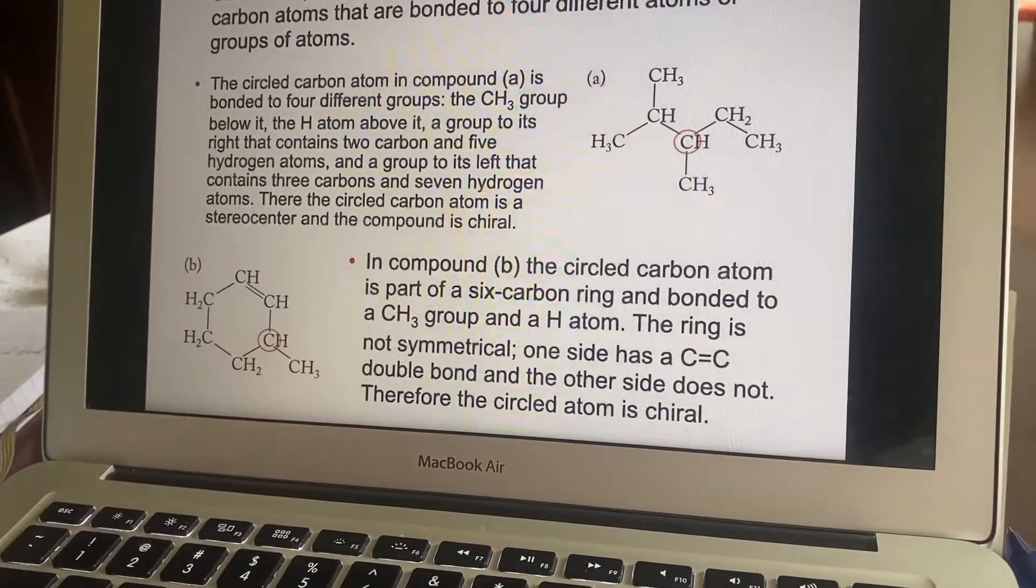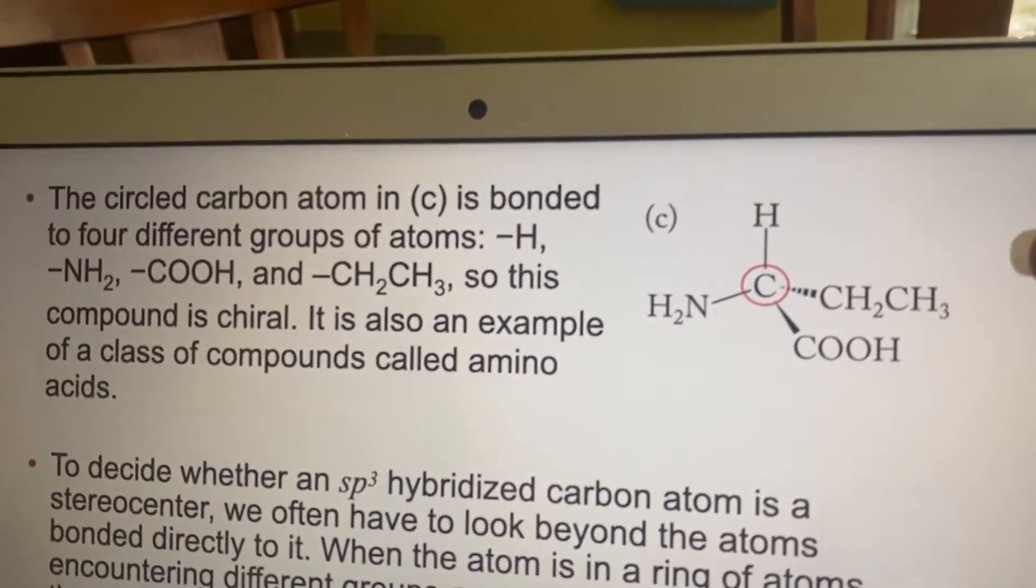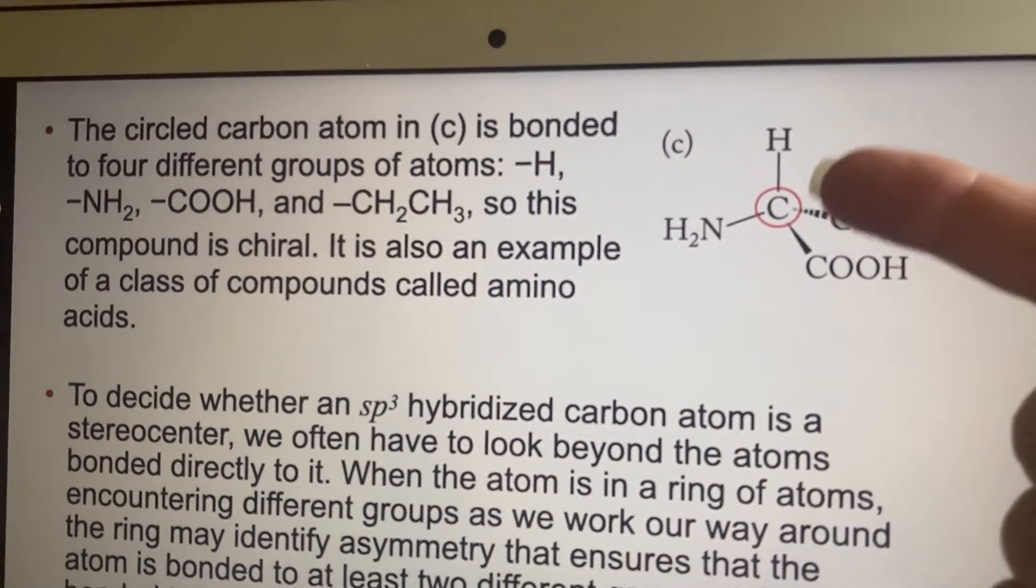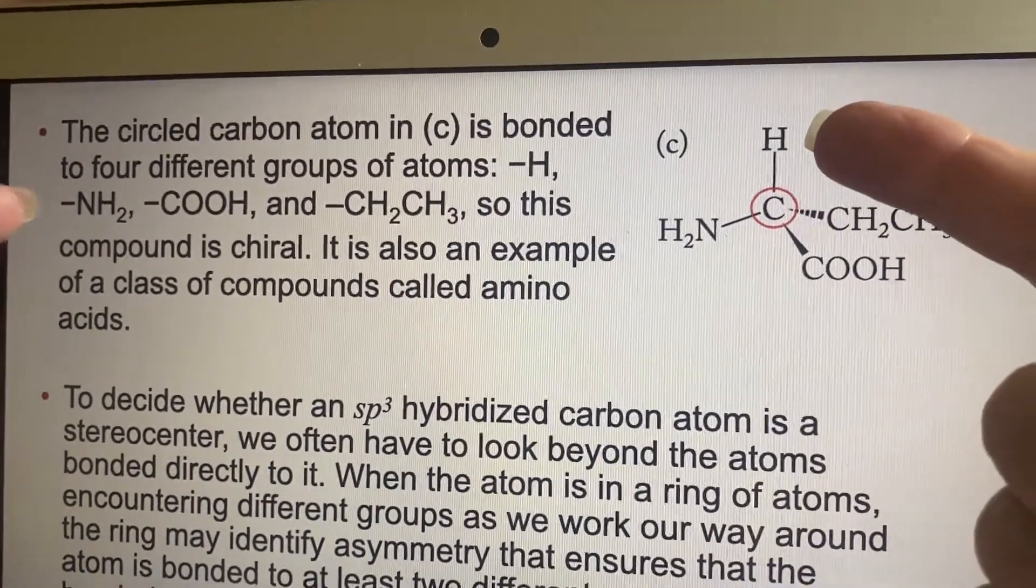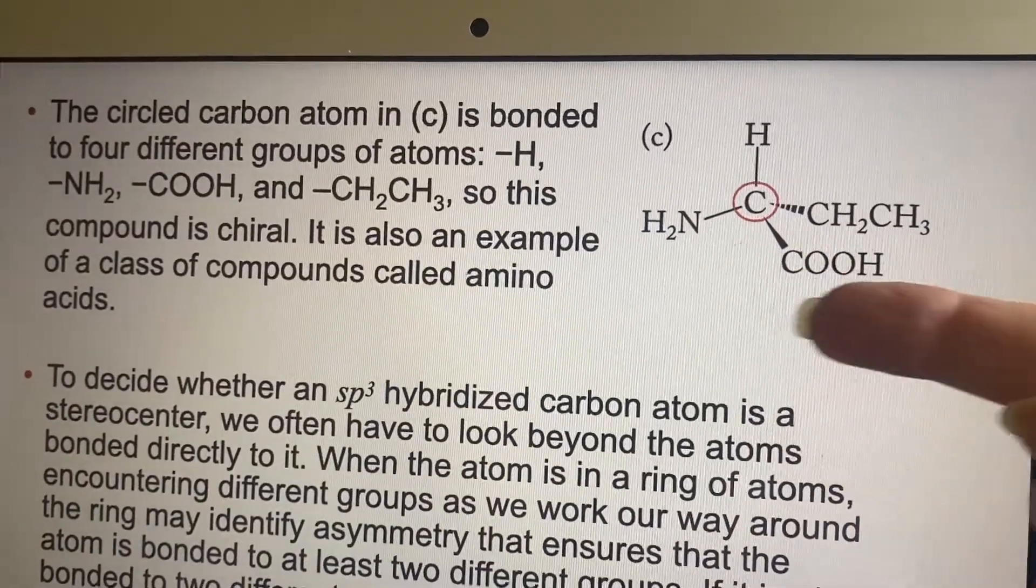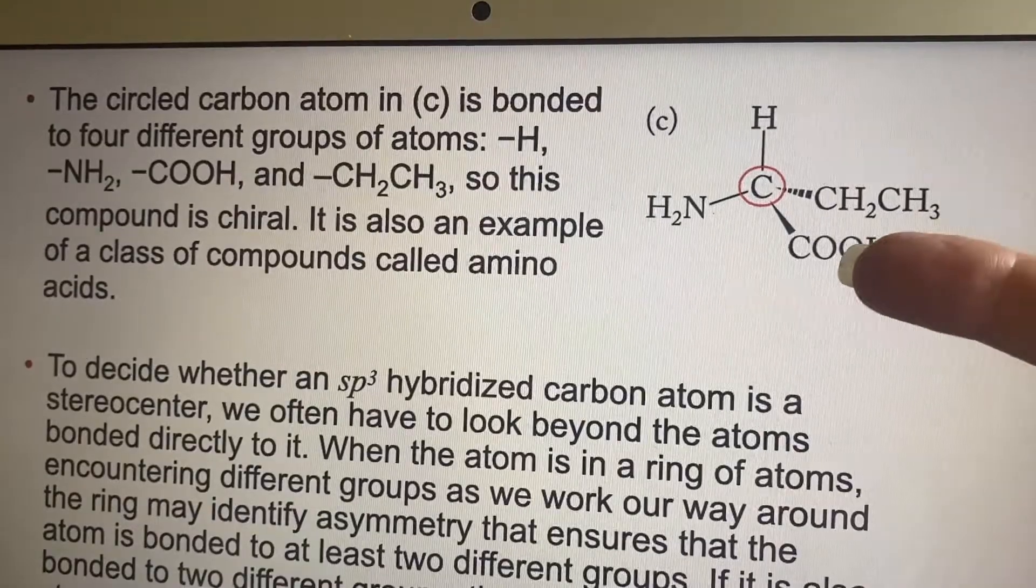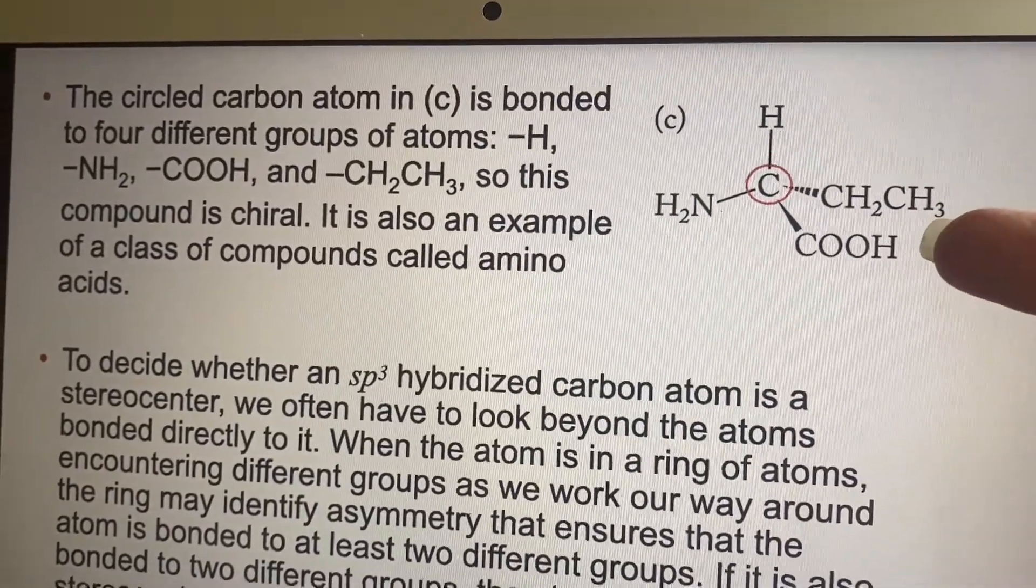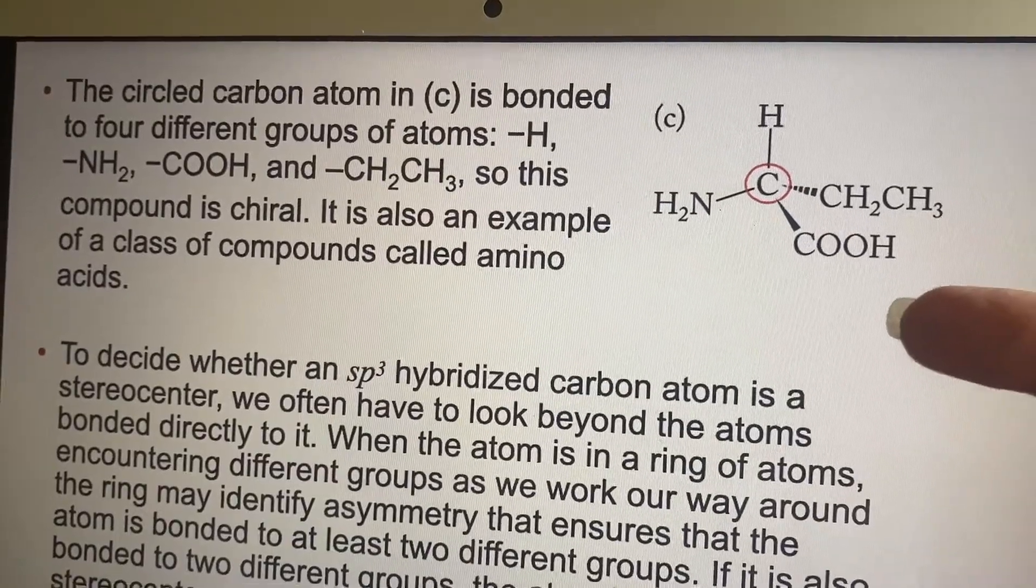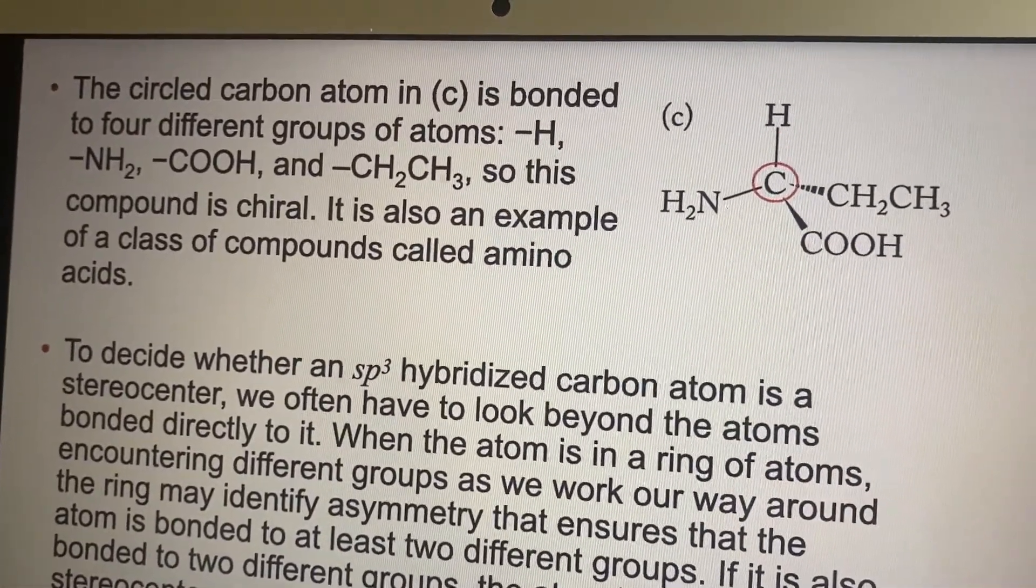You might have to identify which one of these is a chiral center. Here is another one that is bonded to four different groups of atoms. And you can see they've called them out right here in the listing. So you have the hydrogen, the amine group, the carboxyl group here, and this ethyl group. So since there are four different ones, it's going to be a chiral compound. And it's also an amino acid because of the fact that we've added this nitrogen into the mix.